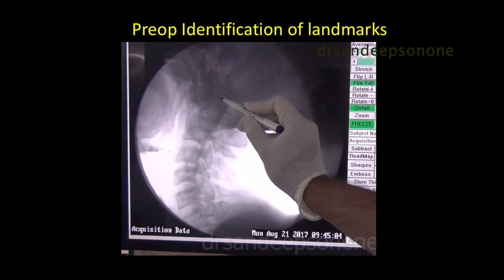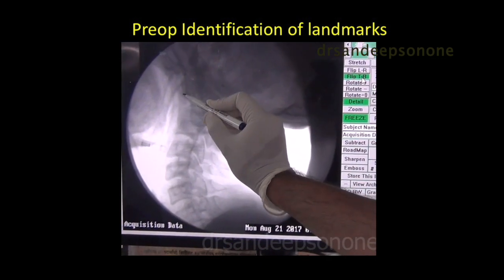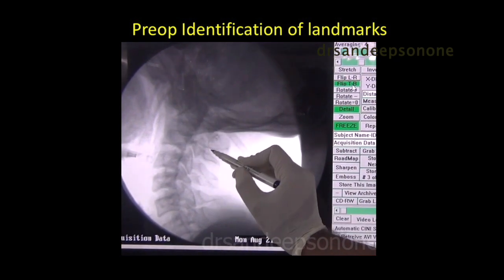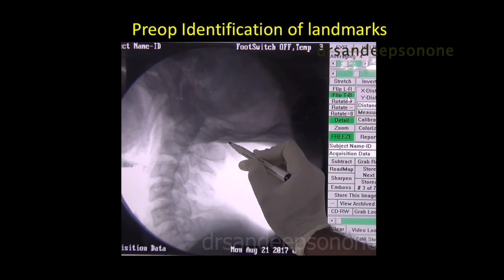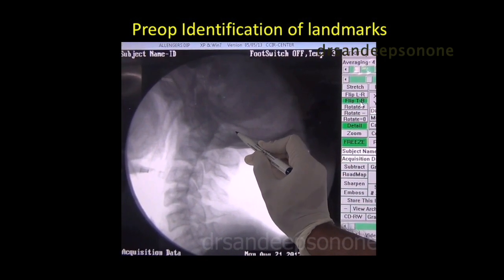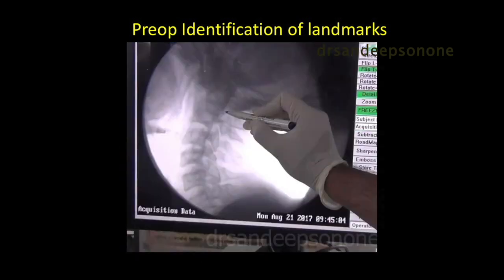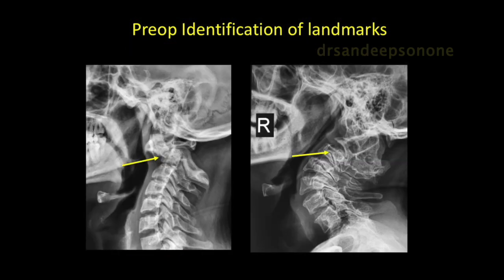Preoperative identification of landmarks is very important. We need to identify the C2 body, the anterior margin, the C1 anterior arch, demarcate the space between C1 and C2, the C2 spinous process, the C1 arch, and the occiput. These landmarks give us intraoperative assessment of the reduction after release. The angle of the mandible is also important because it indicates the ease of reaching the C1-C2 joint complex and the angulation required for superior retraction of the jaw.